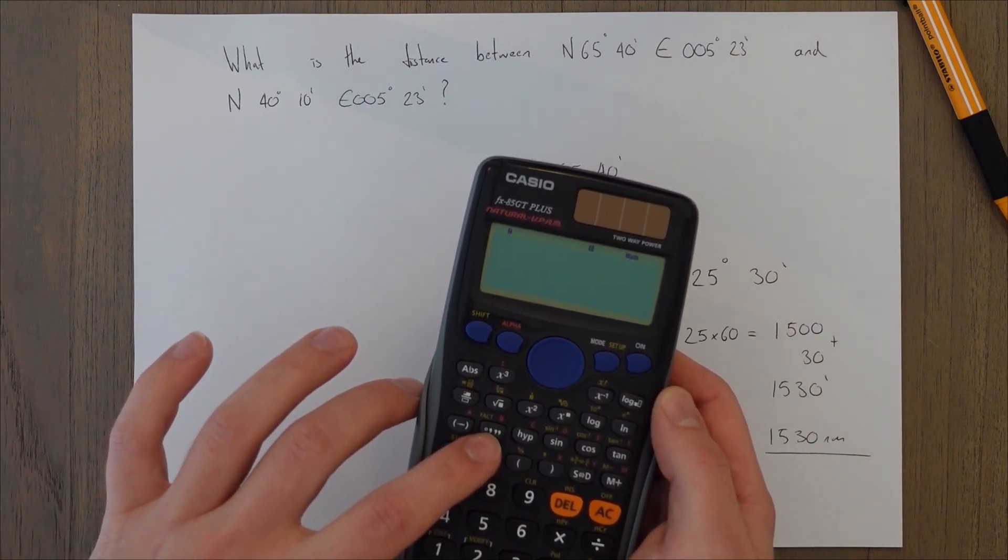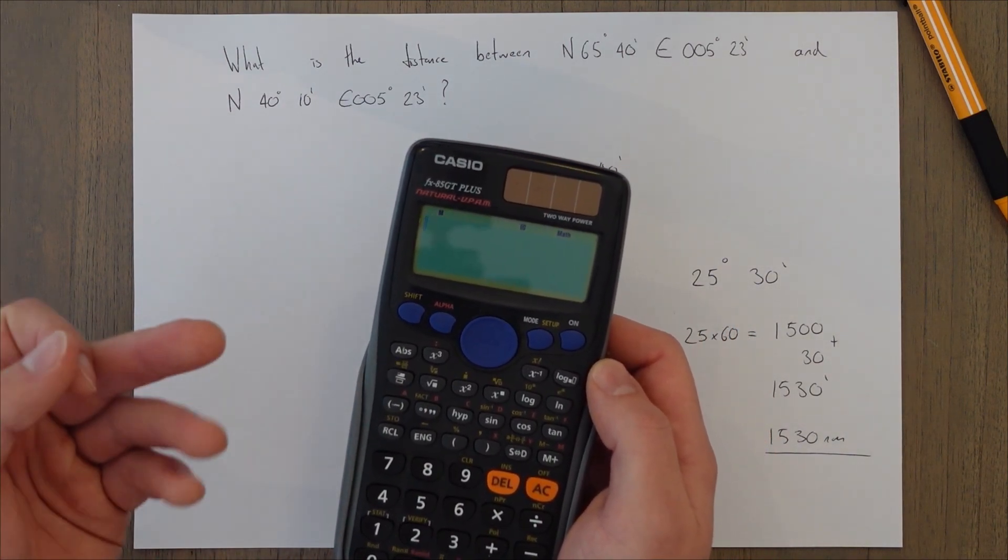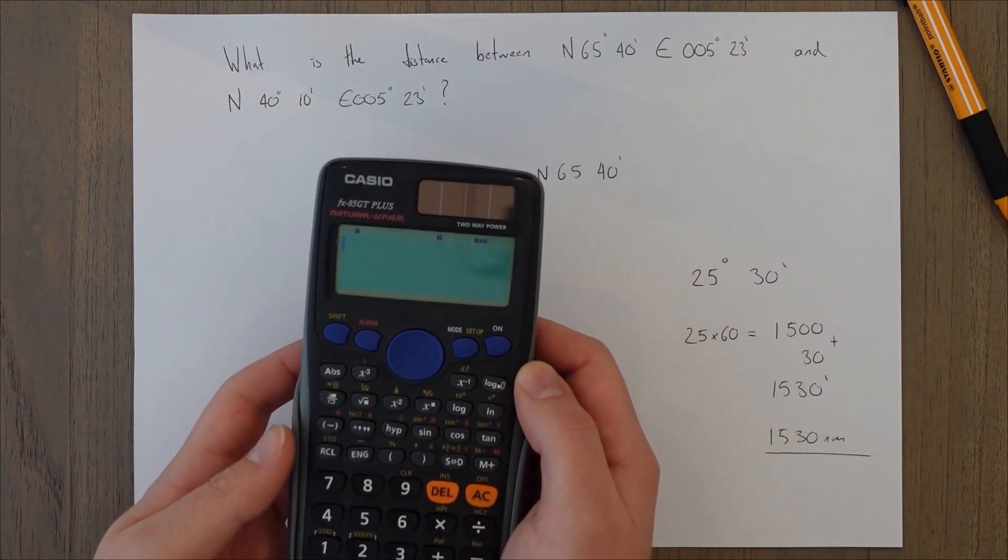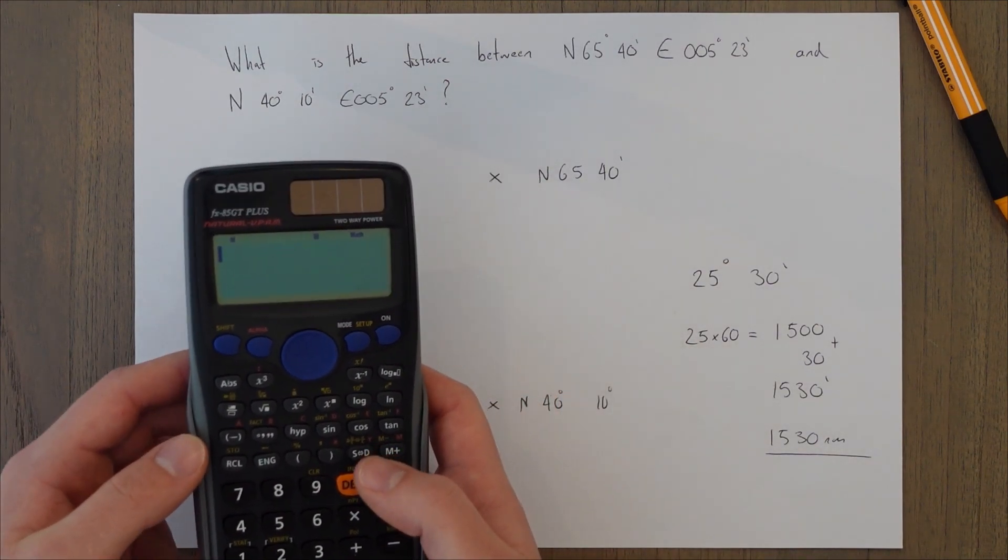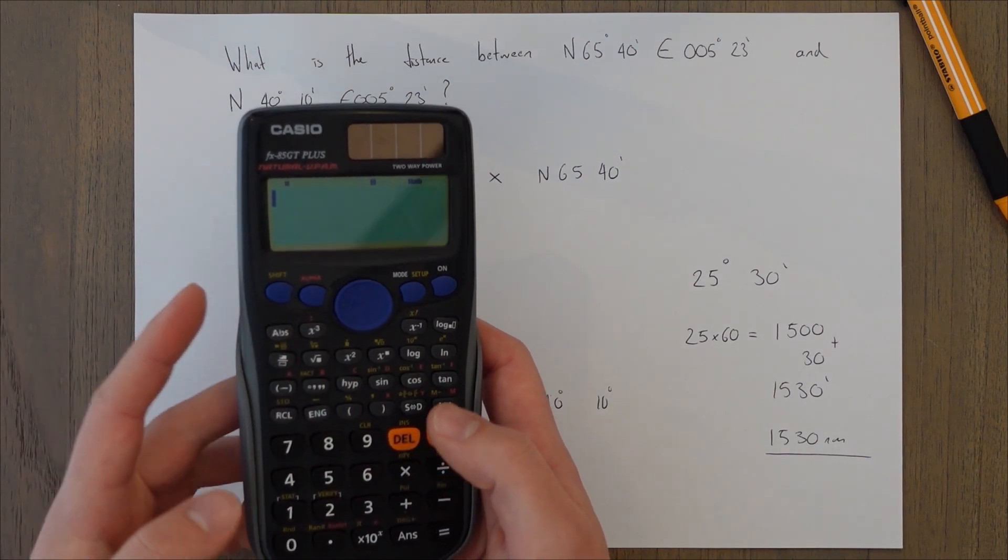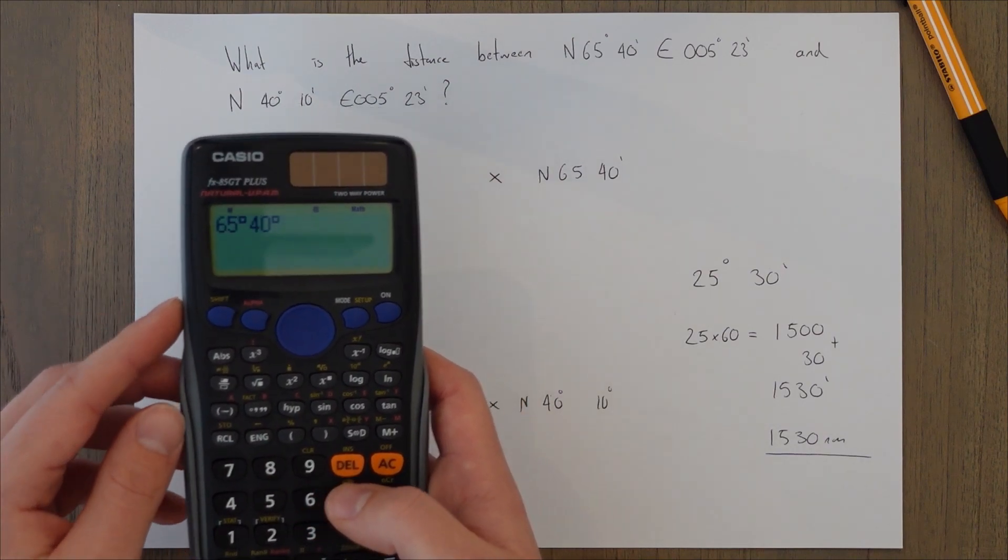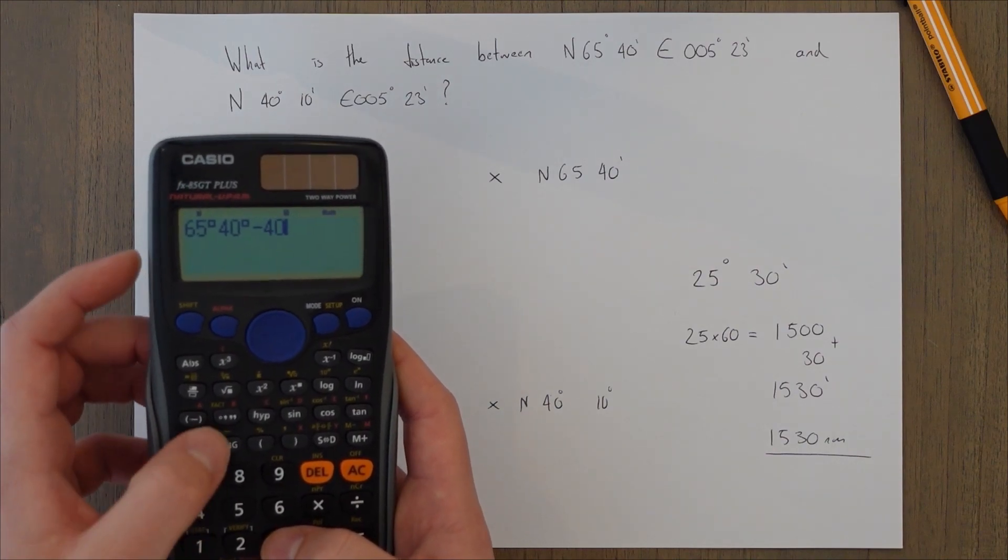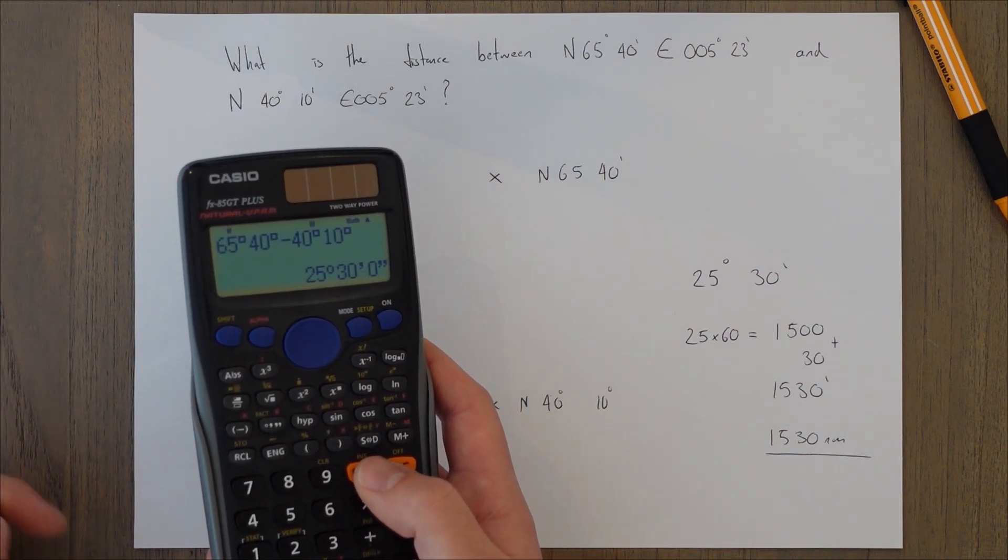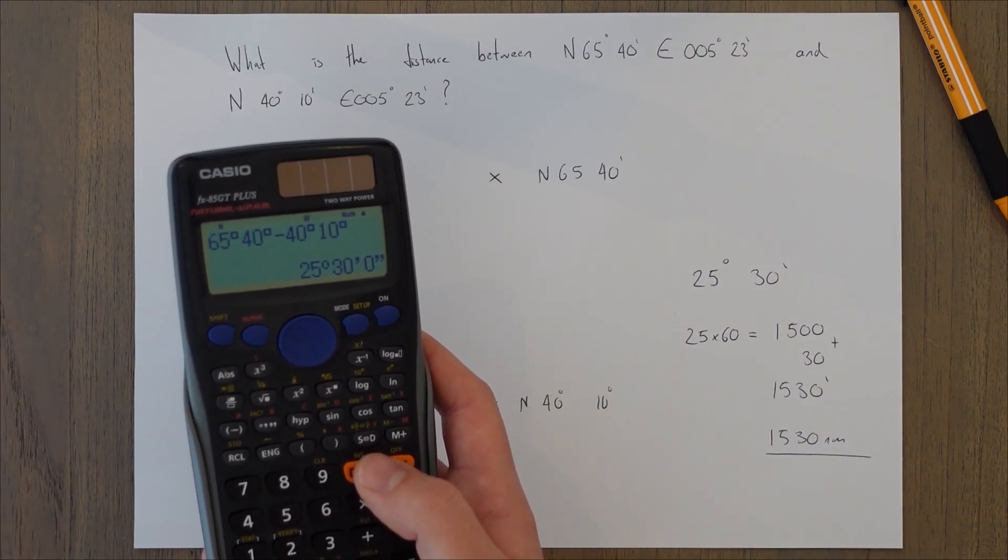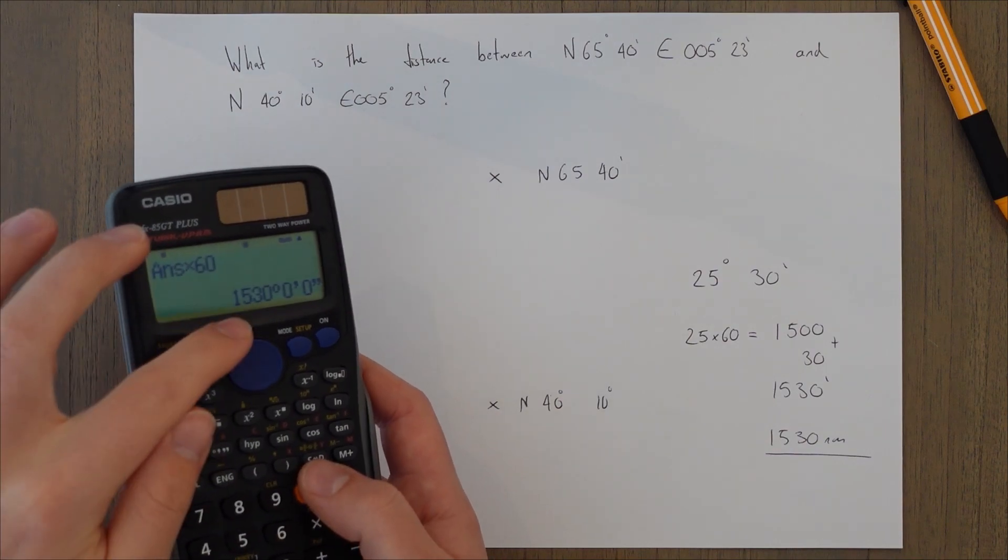So there's a button here, which looks like a degree, a comma, and then two commas, which stands for degrees, minutes, and seconds. And basically what you do is you plug in the numbers and you press this button and that converts it into base 60. So I've got north 65, 40. So I could go 65 degrees, 40 minutes. And then take away 40 degrees, 10 minutes. And you'll see we end up with 25, 30. It'll save you loads of time in the exam if you do it this way. And it helps with that confusion of base 60. And then, you know, you times it by 60, 1530.